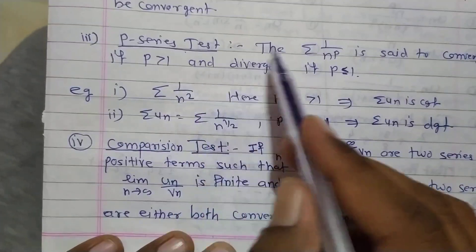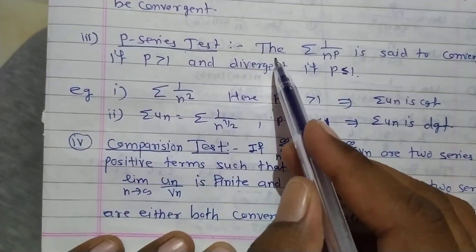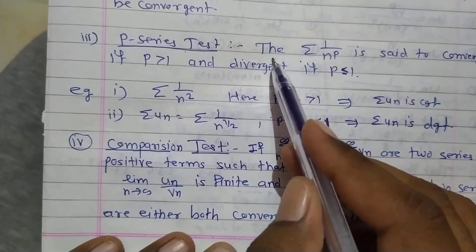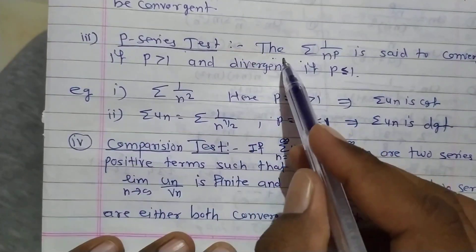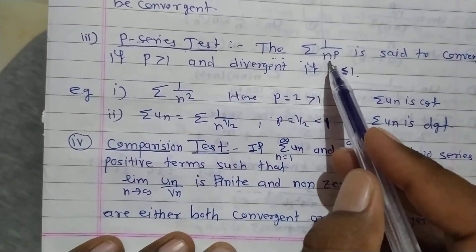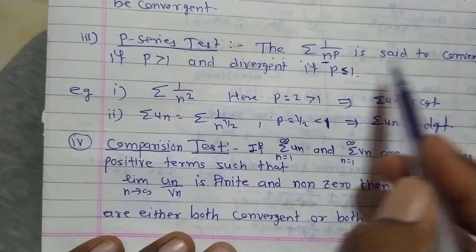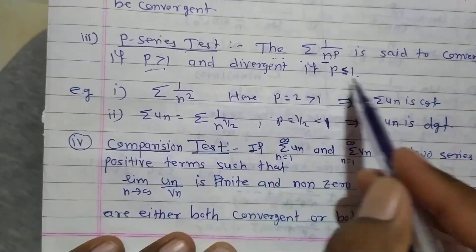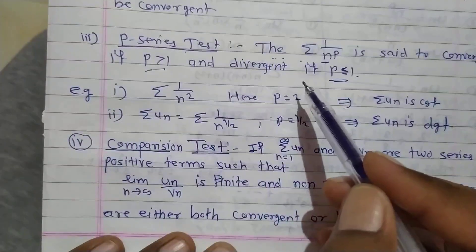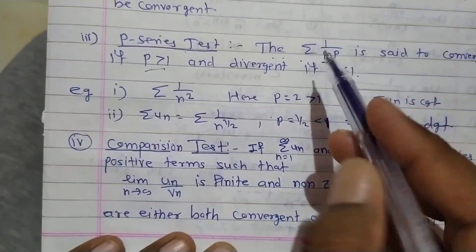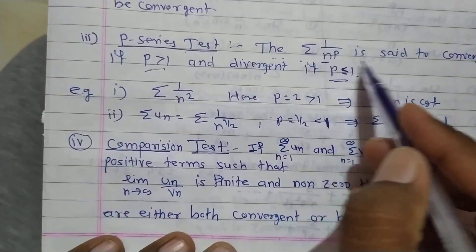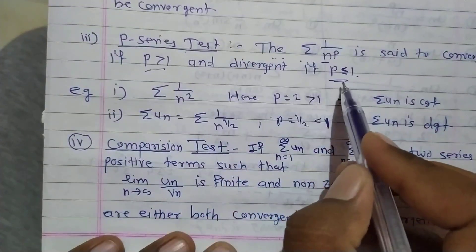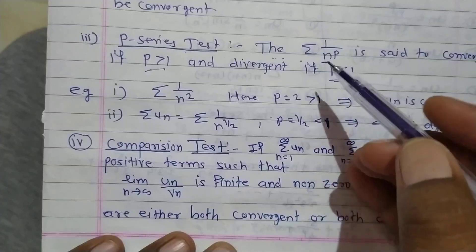So what is the p-series test? In the last video I also explained this, today we will repeat it. The p-series test states that the series 1/n^p is said to be convergent if p is greater than 1, and divergent if p is less than or equal to 1. This is very important.